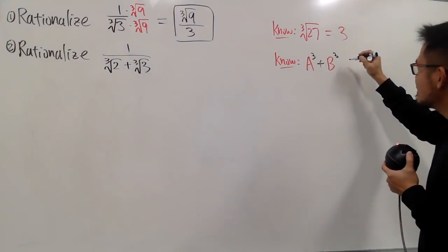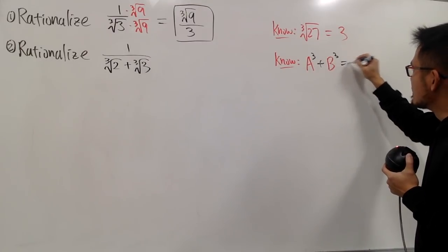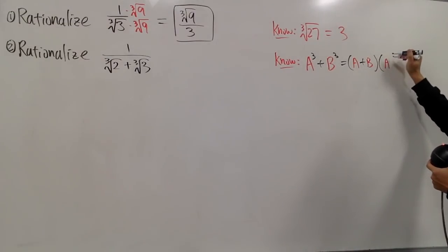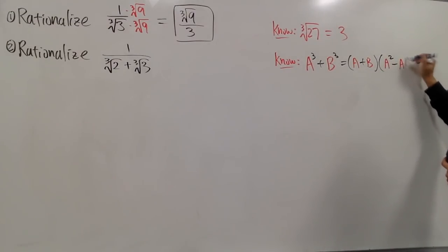So, let me just do this for you guys. This right here, we know it's going to be a plus b, and we multiply by a squared minus ab plus b squared, okay?